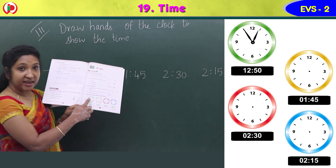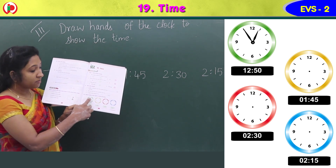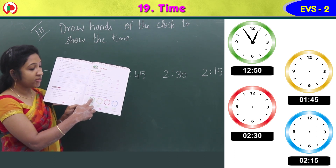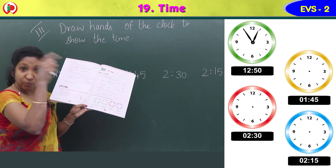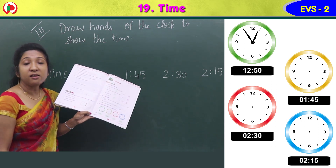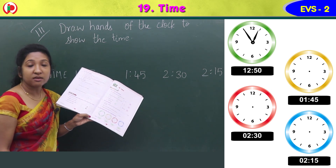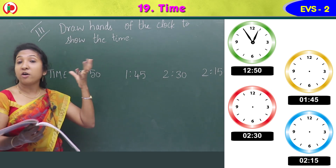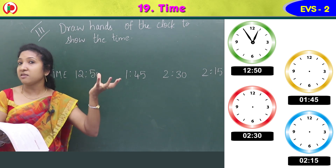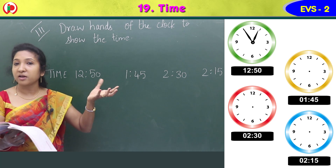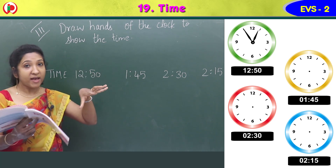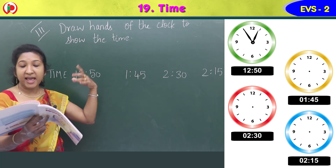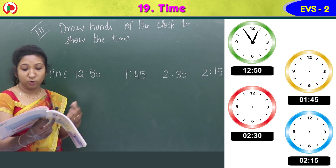The first time to show is 12:50. The minute hand, the bigger one, points to 50 — which is at 10 on the clock. The smaller hour hand points to 12. So draw the hour hand at 12 and the minute hand at 10.